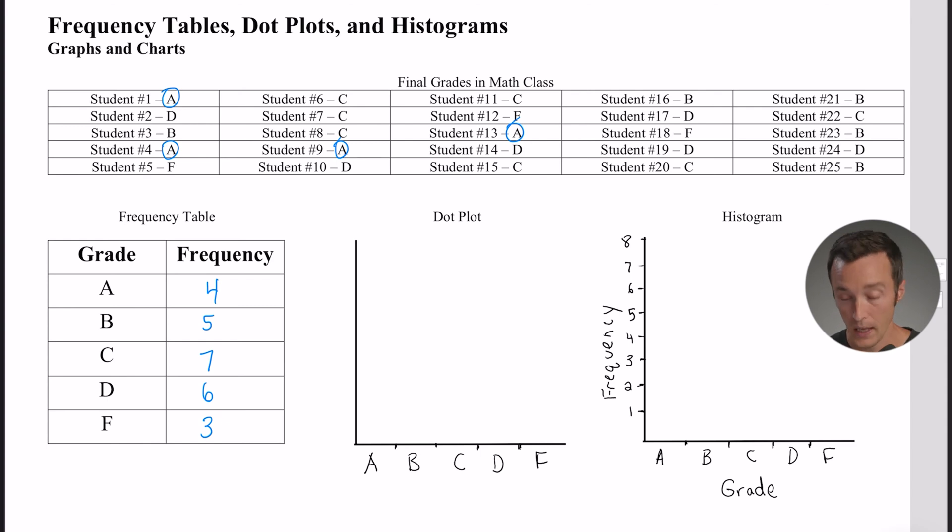Now a dot plot is kind of related to a frequency table. In other words, you can use a frequency table to fill out a dot plot. A dot plot can use dots, hence the name, or X's, or check marks, or smiley faces, or whatever you want. It's just a way to translate it to a visual representation of how many there were.